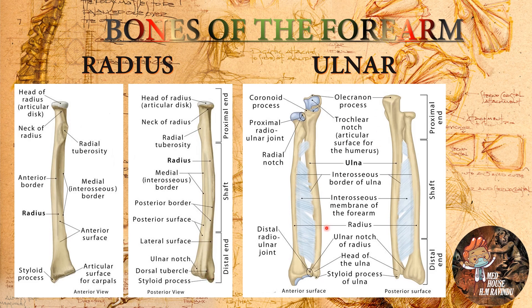Now let's talk about the ulna bone. In the anterior surface you can see the olecranon process, trochlear notch, coronoid process, and the proximal radioulnar joint.